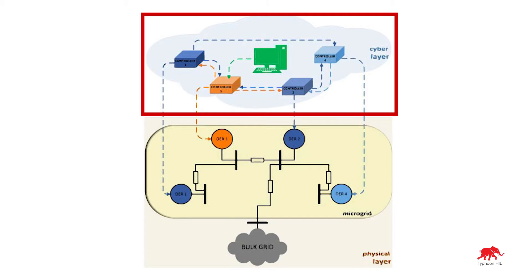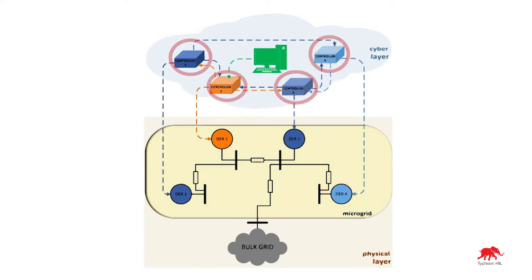The physical layer consists of a microgrid and a bulk grid, and they are interconnected to a transmission line. The cyber layer consists of four controllers, an aggregator,